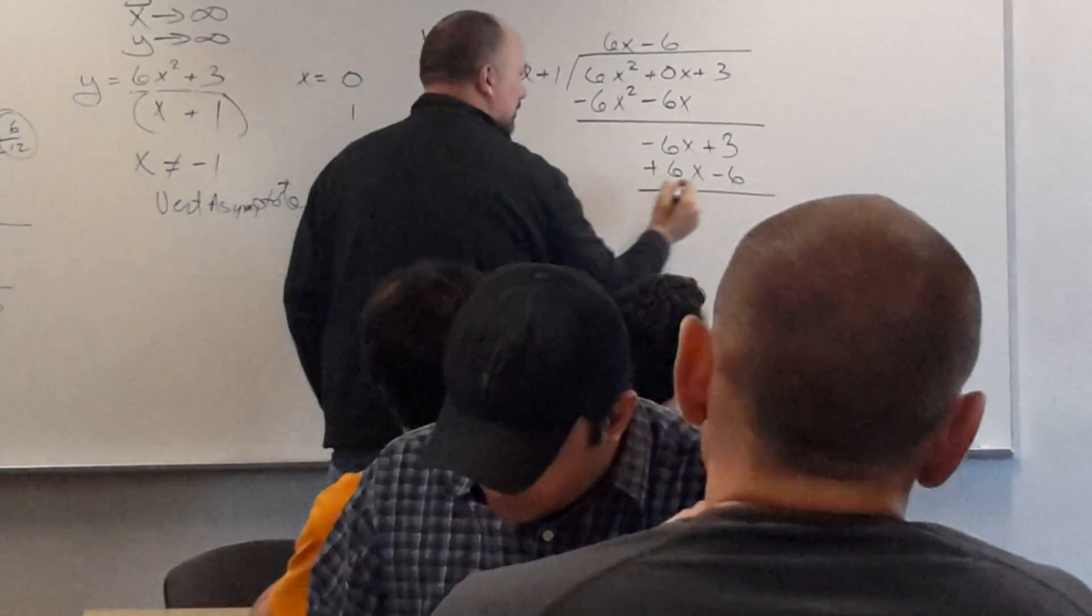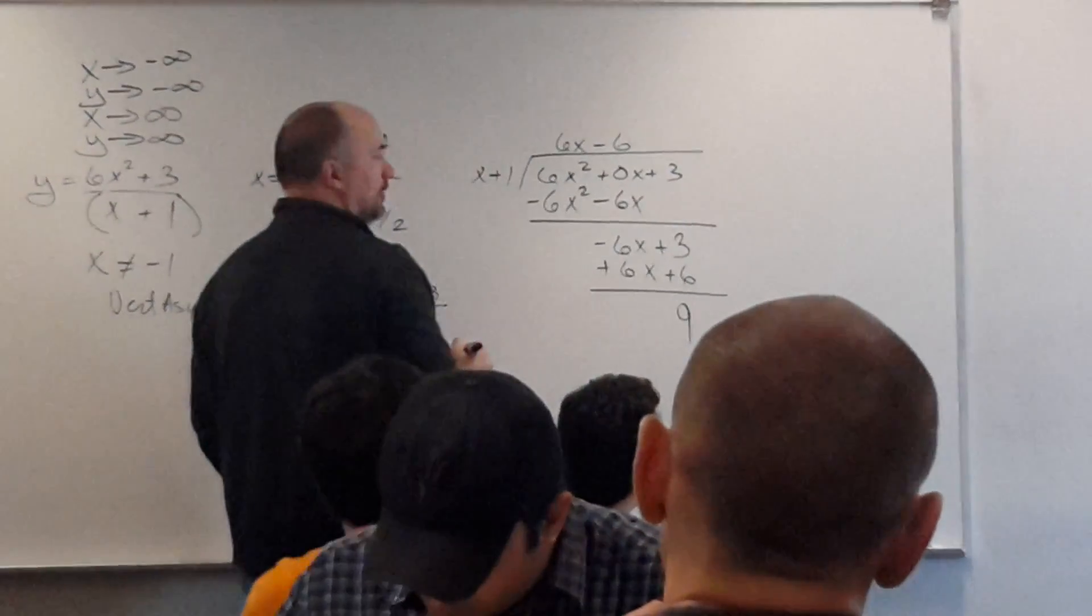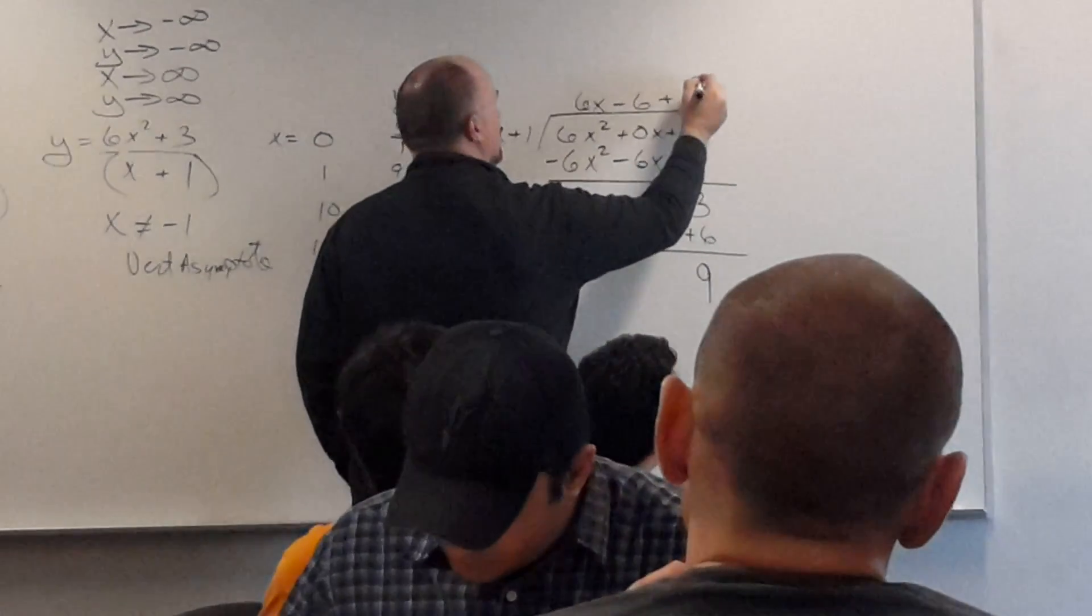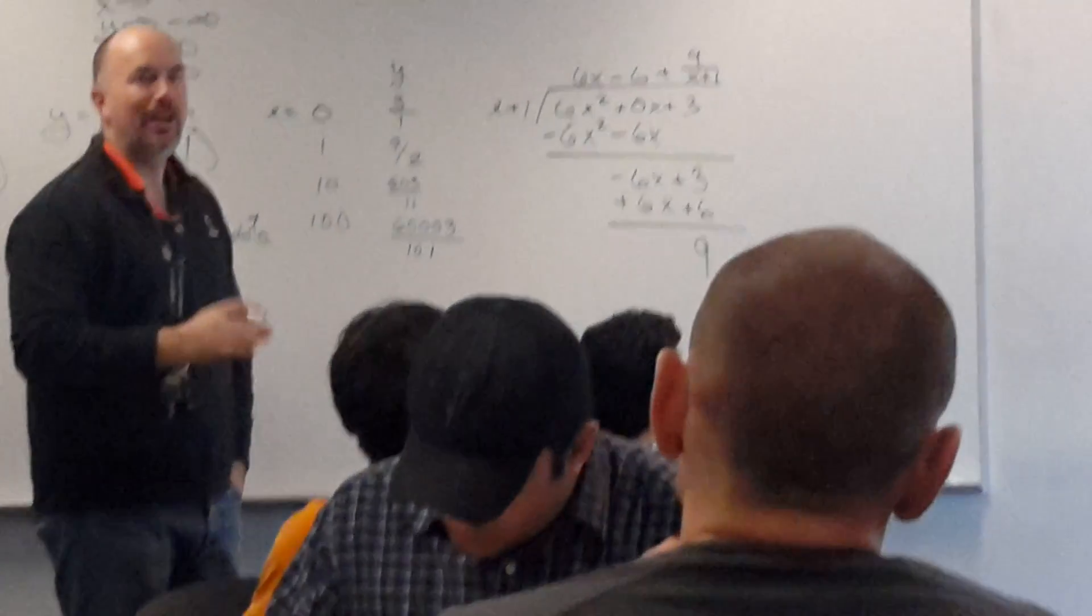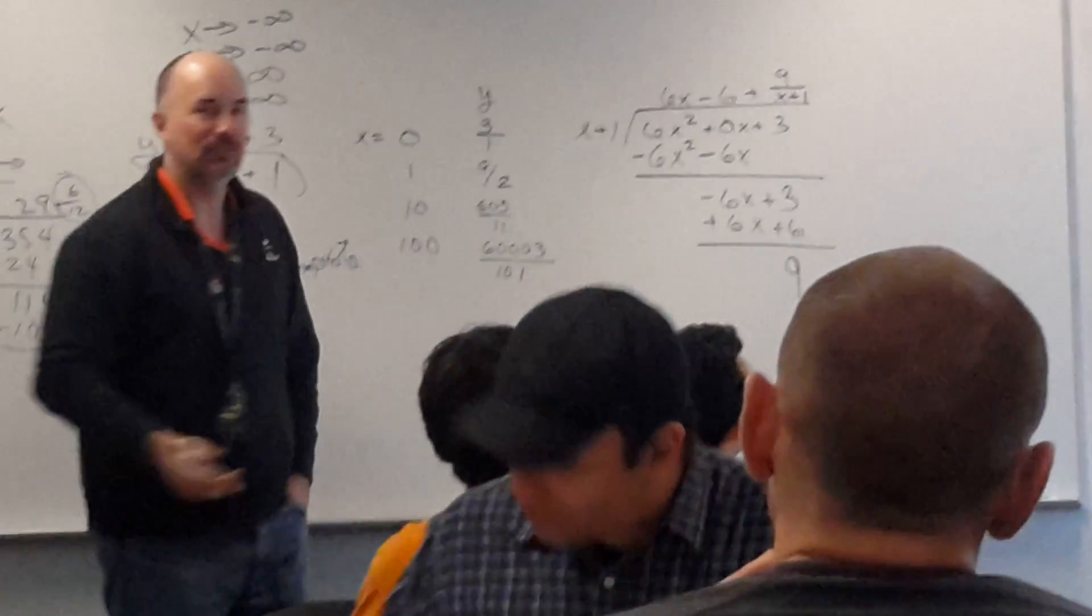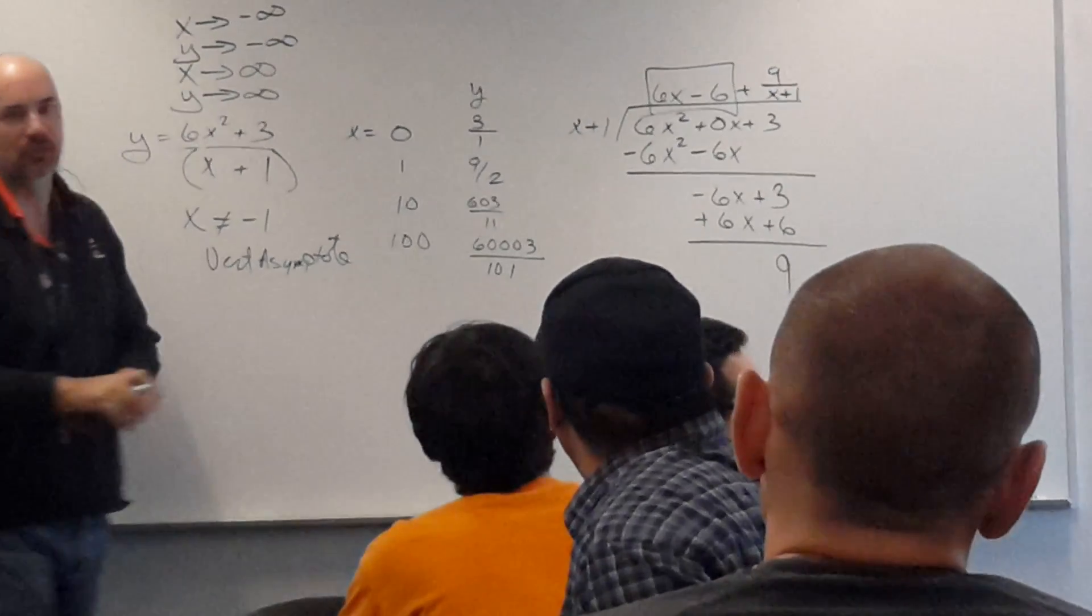Change the signs and add. And you get 9. So plus 9 over x plus 1. So what is the equation of that slant asymptote? 6x minus 6. Just ignore the remainder.